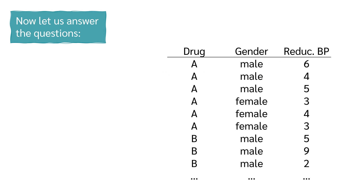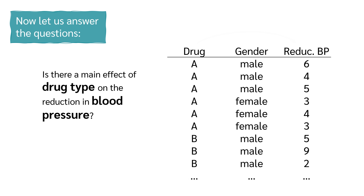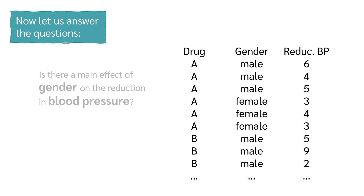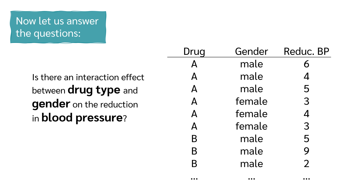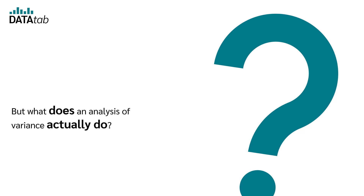Now let us answer the questions. Is there a main effect of drug type on the reduction in blood pressure? Is there a main effect of gender on the reduction in blood pressure? And is there an interaction effect between drug type and gender on the reduction in blood pressure?